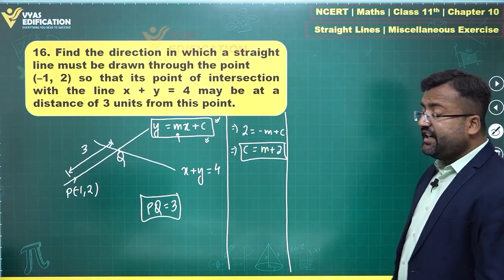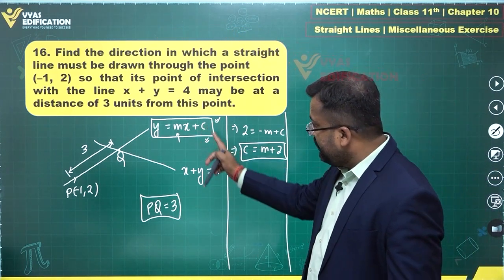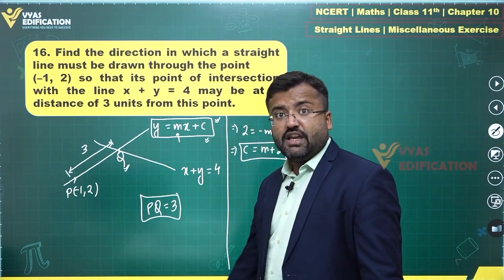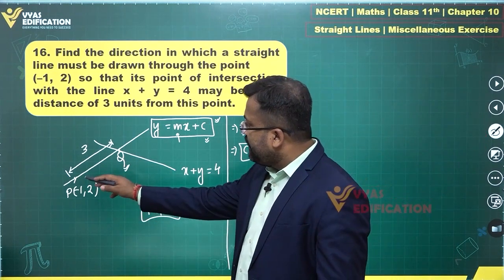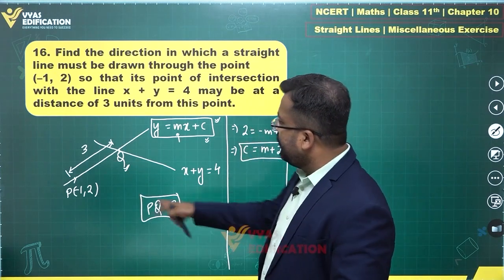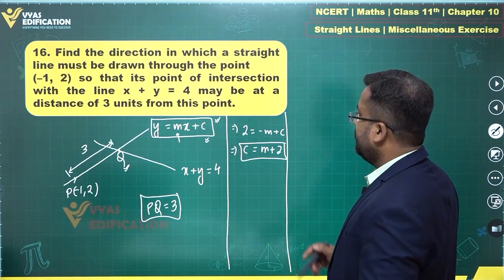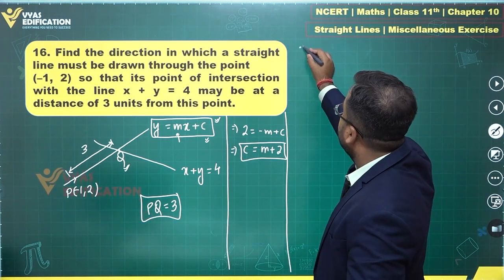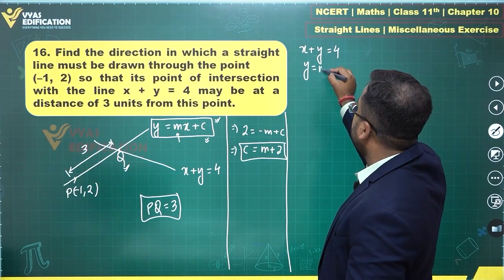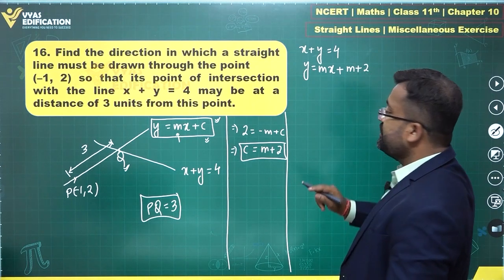Once c is eliminated, we have the equation of our line. We can now find the coordinates of Q by solving simultaneously with x + y = 4. The equation of the line becomes y = mx + (m + 2). We then replace y with 4 - x from the first line to find Q.